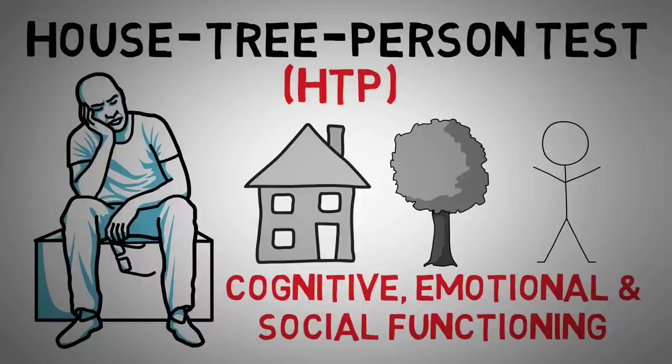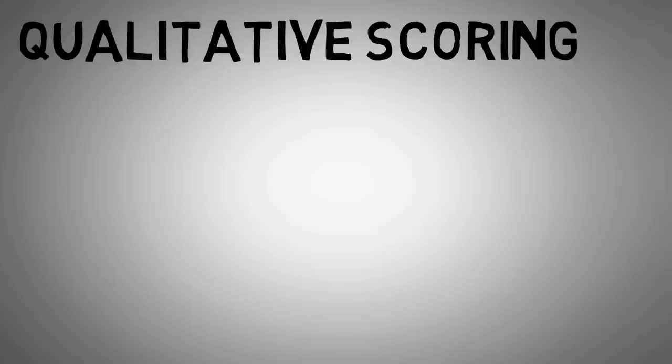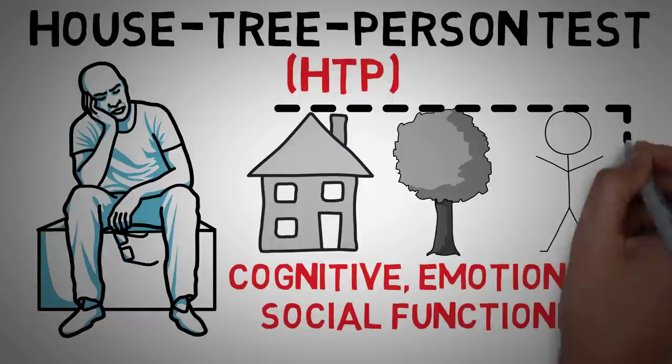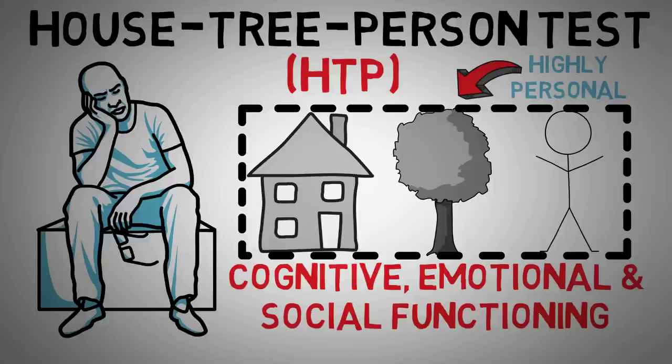Qualitative scoring is a subjective analysis of a drawing meant to measure the test-taker's personality. This type of scoring of the House Person Tree Test is highly personal and can vary from one analyst to another. Similarly, there is limited empirical evidence to support its validity.